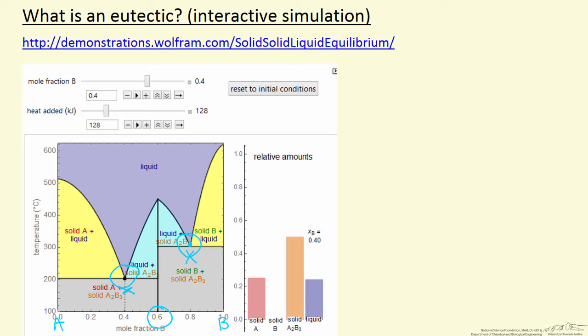So the interactive simulation allows you to change the mole fraction of B by moving this slider. It also allows you to change the heat added, in other words you can sit at a temperature and then add additional heat and watch which phases are formed.